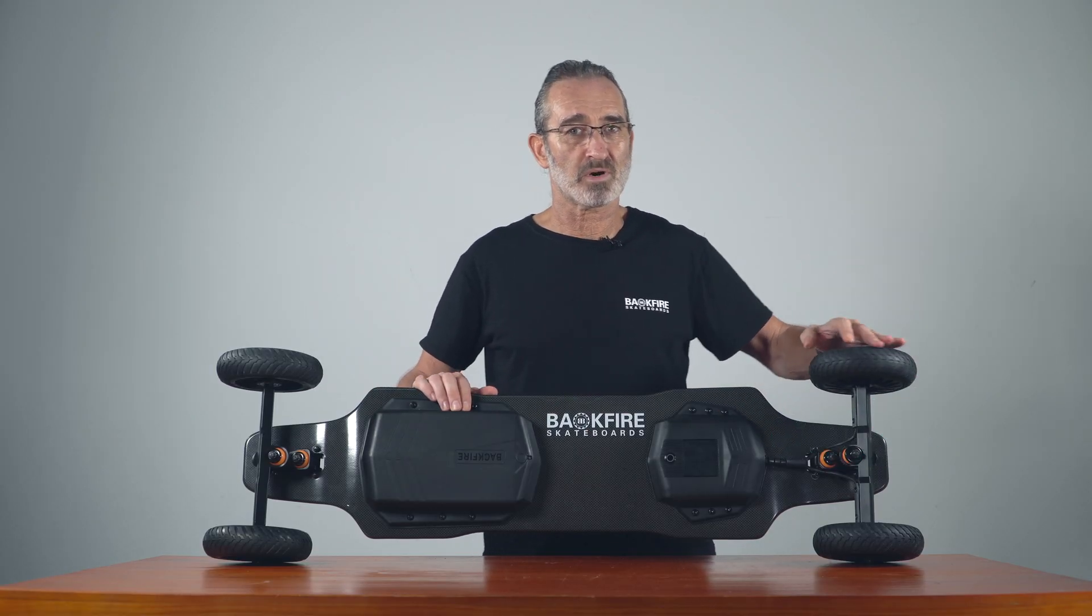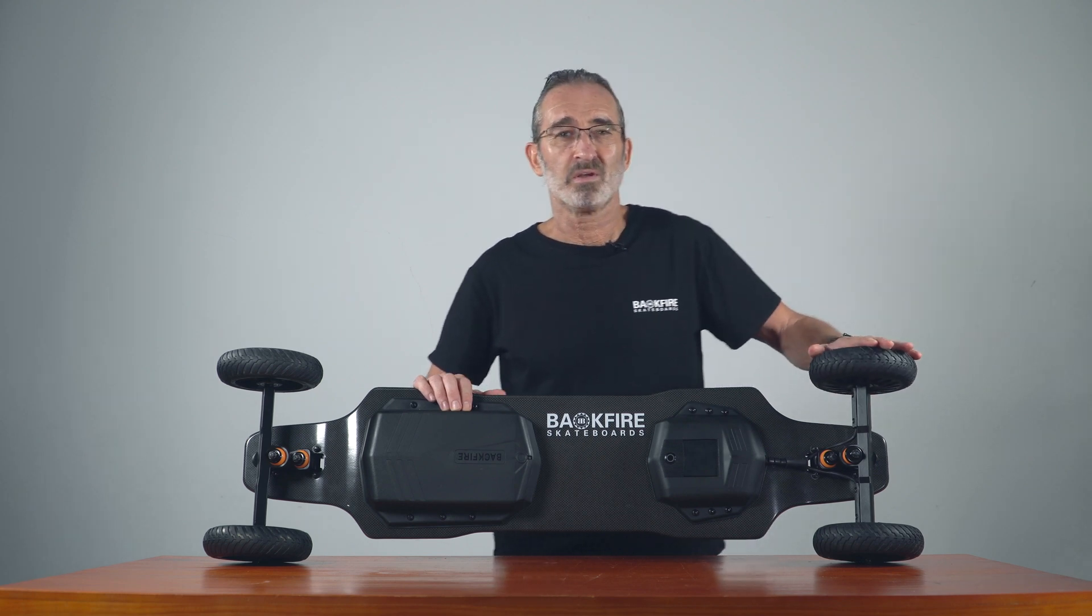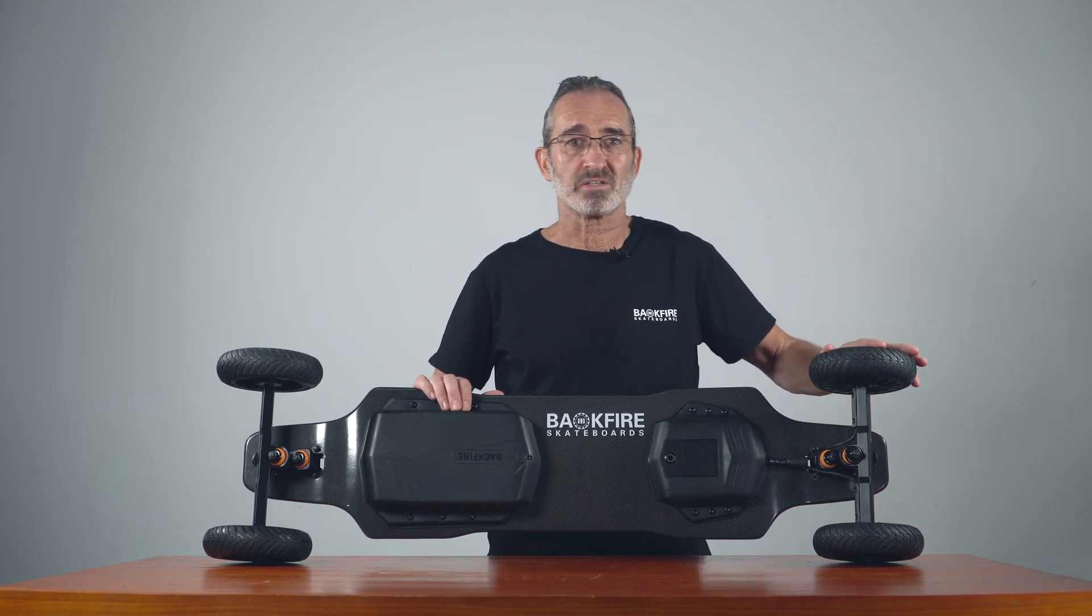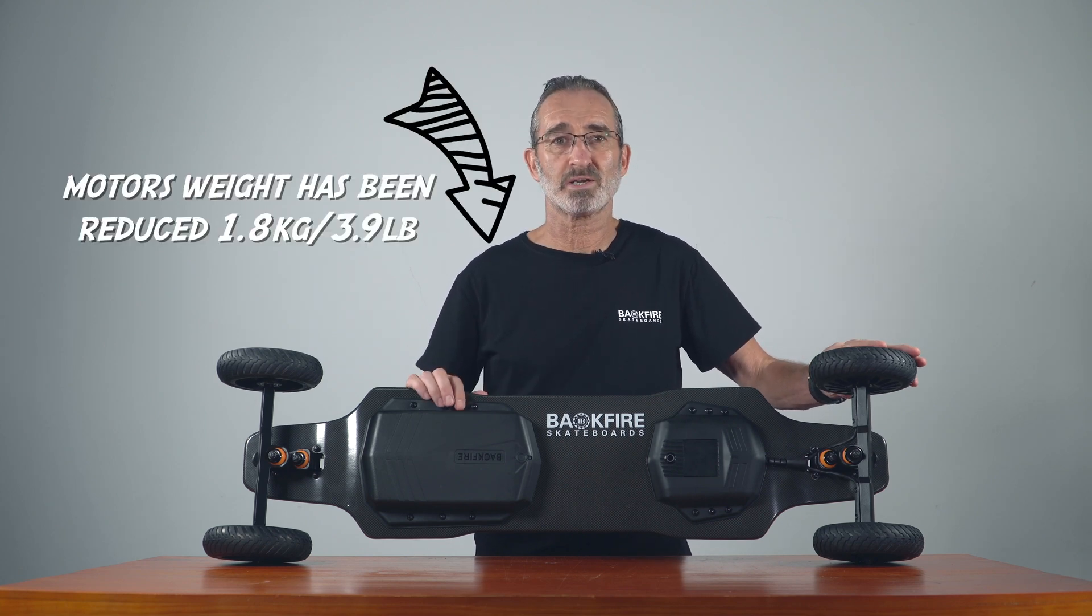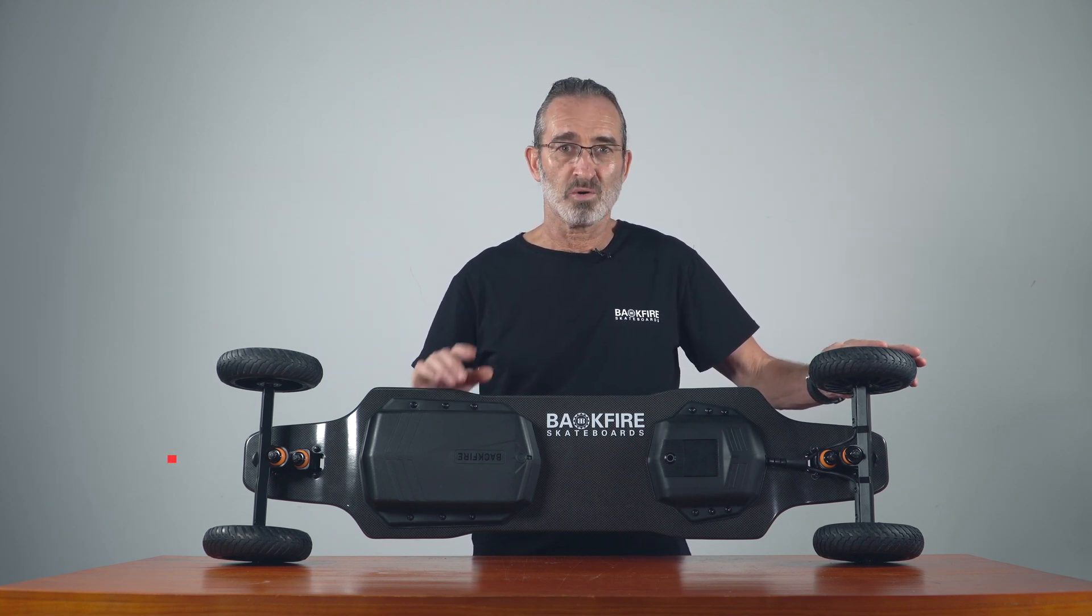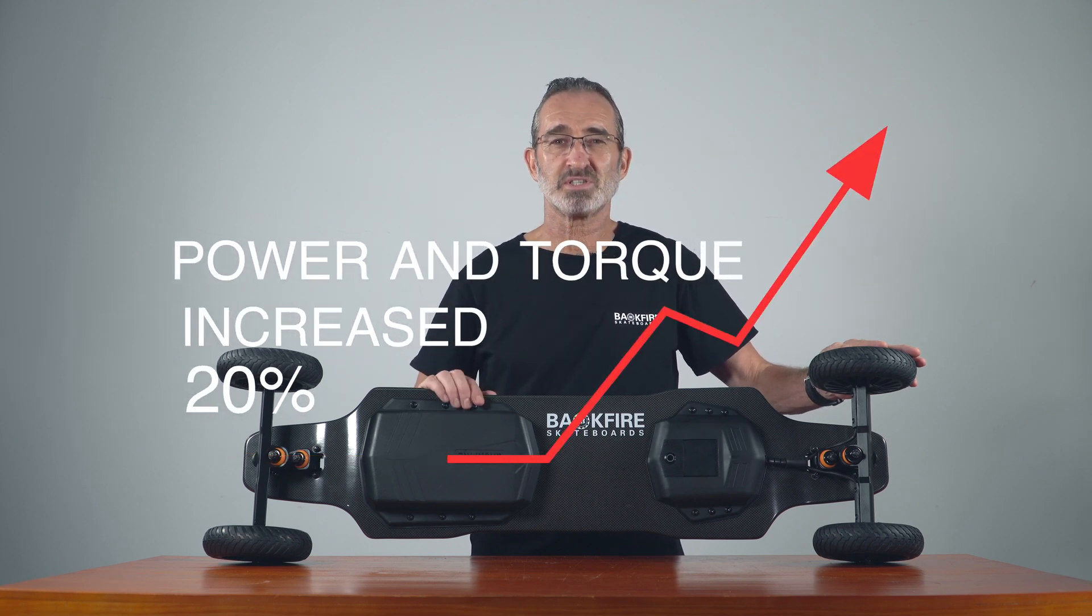The specially designed 12S large wheel hub motor is optimized by the system. The whole set of motors is lighter than the previous generation Ranger X1 by 1.8 kilograms, that's 3.9 pounds, while the power and torque are increased by 20%.